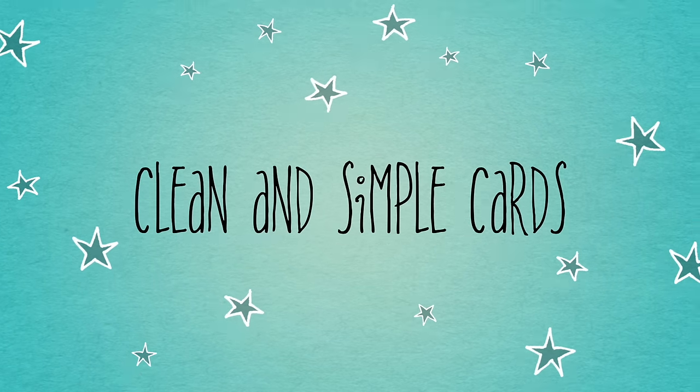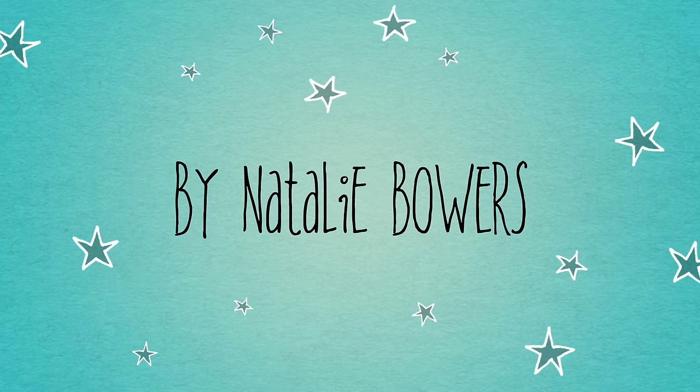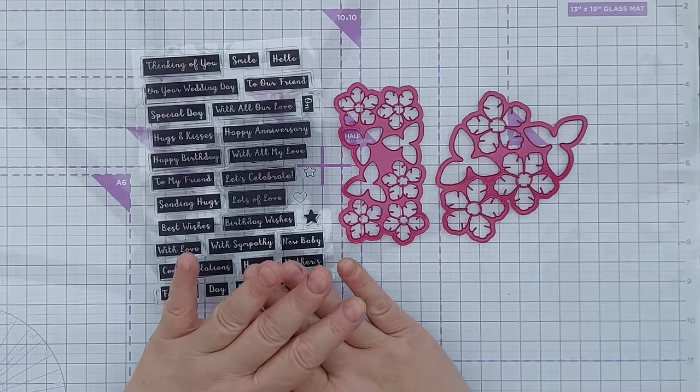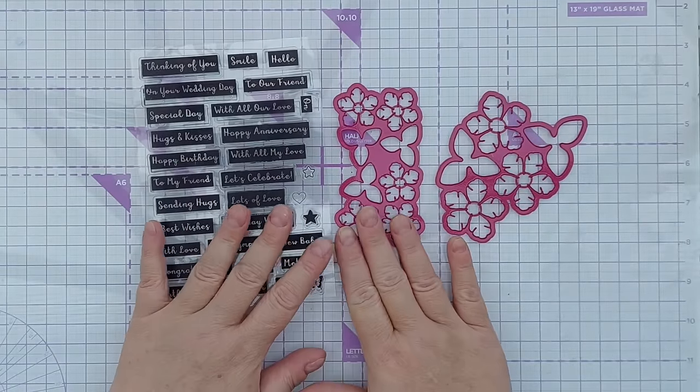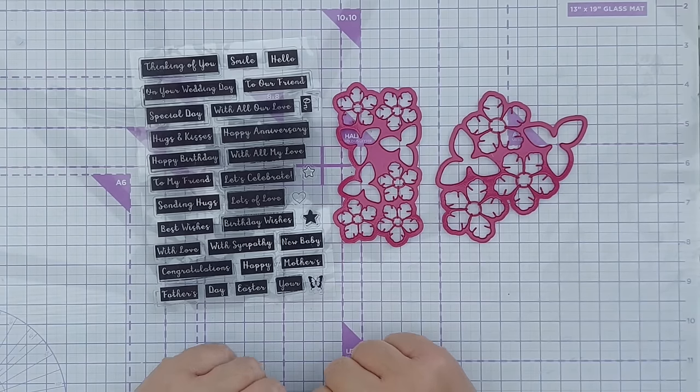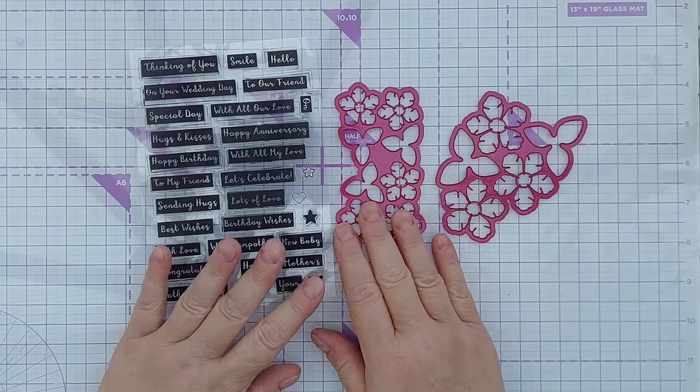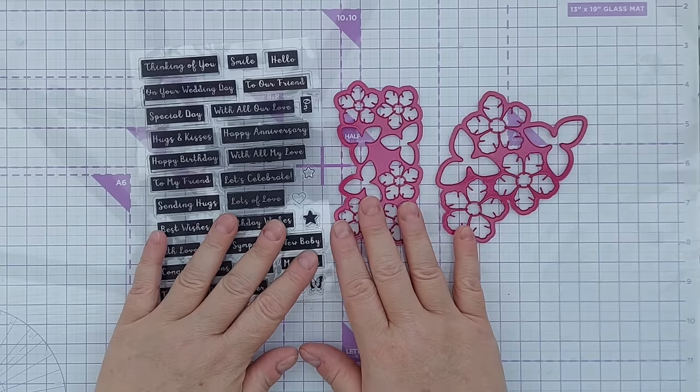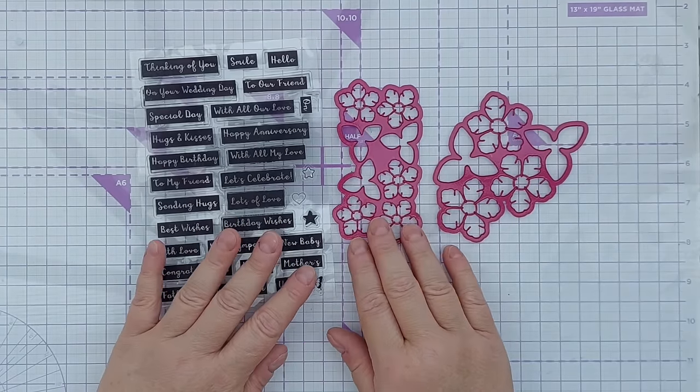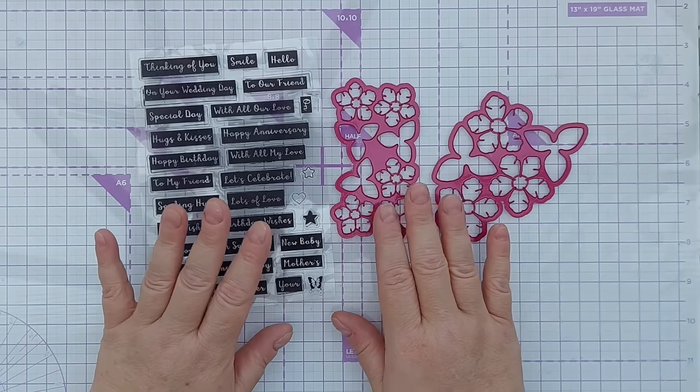Hello crafty friends, welcome to another clean and simple card making video. Yesterday I went for a little rummage around my local crafty charity shop, it's the Rowan's Hospice craft shop in Cowplain, Hampshire. It sells pre-loved and sometimes brand new craft supplies, all sorts of crafts, not just paper crafts, knitting, crochet, sewing, all that kind of thing.